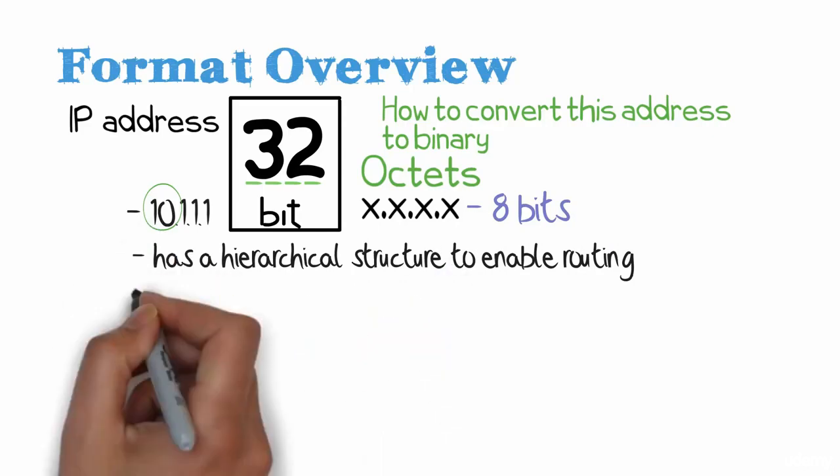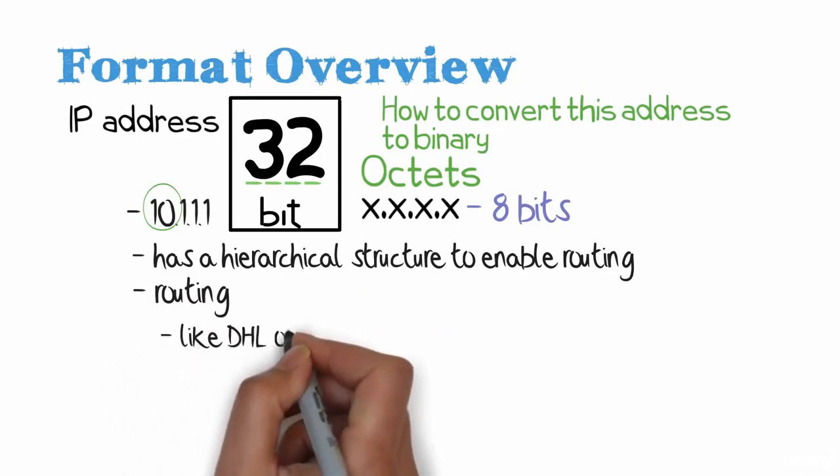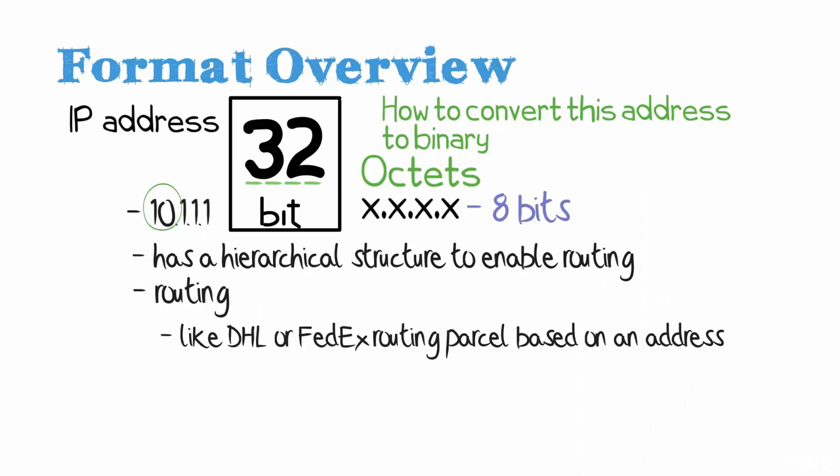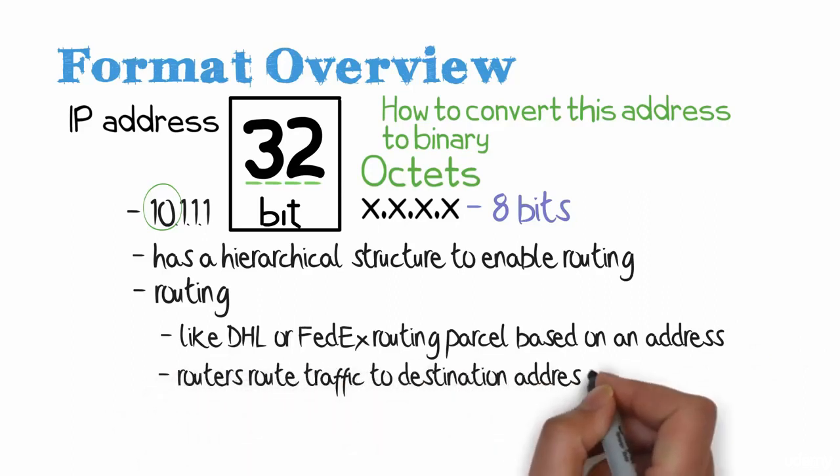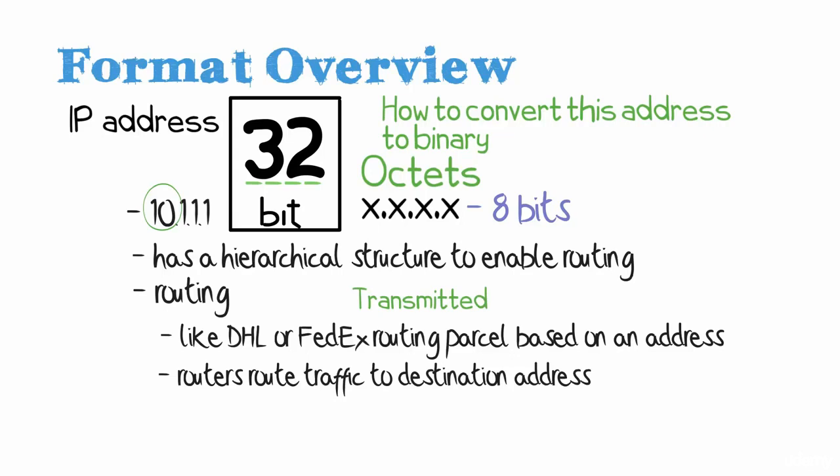IP addresses are used for routing in a very similar way to the way DHL or FedEx route parcels based on a destination address. Routers will route traffic to a destination address when unicast packets are transmitted. Multicast packets use a different mechanism and do their routing based on source address.